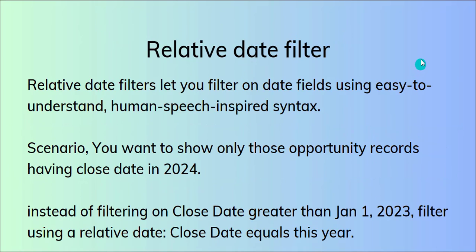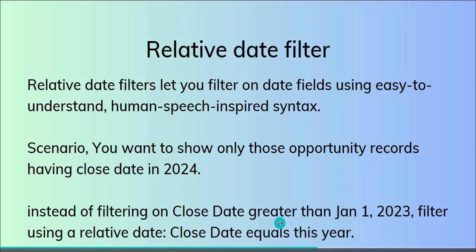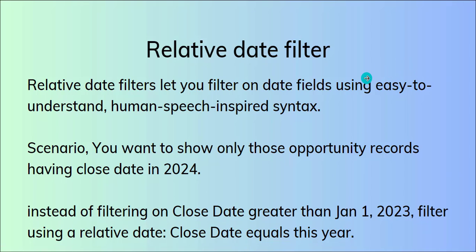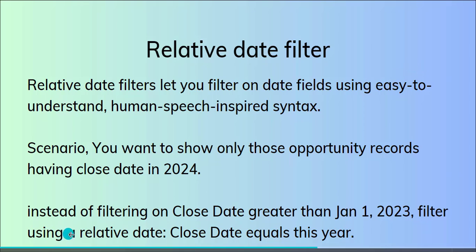What is a relative date filter? The relative date filter is a feature which lets you filter on date fields using easy-to-understand, human speech-inspired syntax. For example, to show only opportunity records having close date in 2024, the normal approach would be: close date greater than 1st Jan 2023 — which looks very tricky. But using relative date filter, you simply write: close date equals 'this year' — which is very easy and easy to understand.